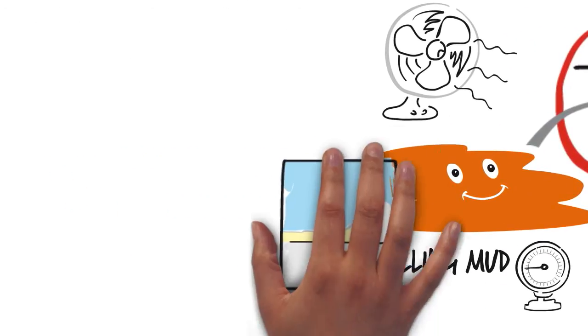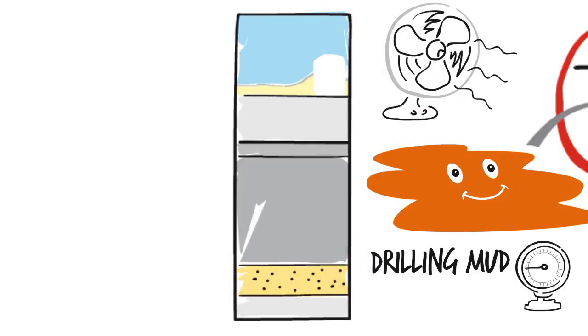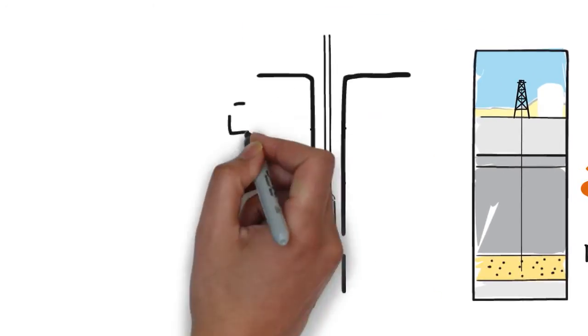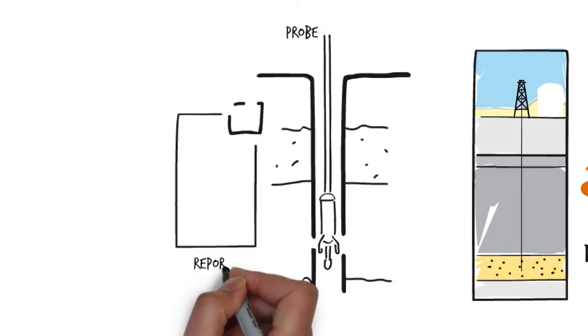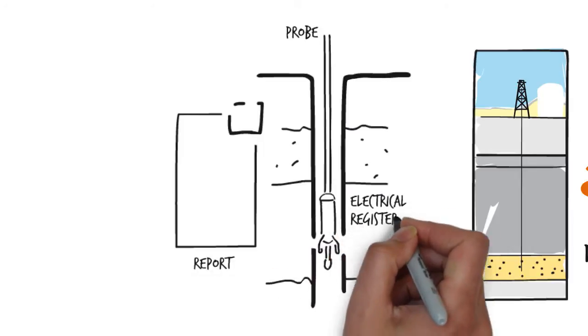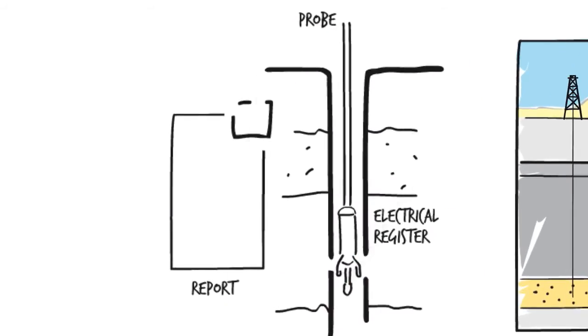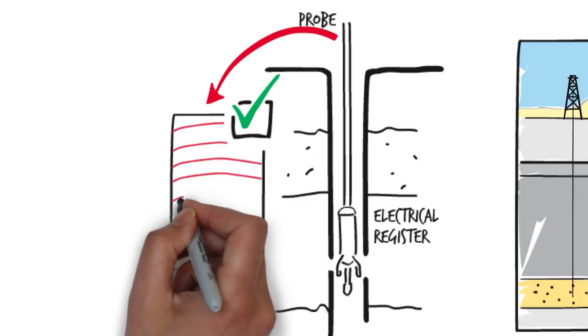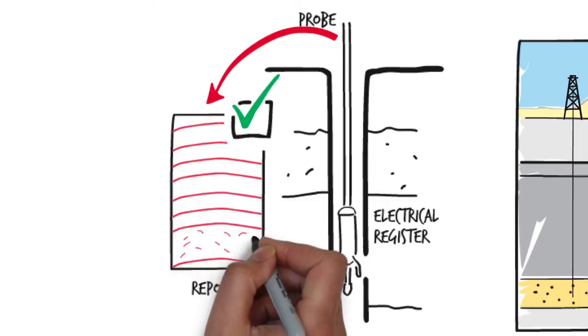We've reached the reservoir rock. Once the rock, which hopefully contains hydrocarbon, has been drilled, probes are introduced into the well to measure different physical parameters, both of the rocks and of the fluids in their pores. These measurements determine if the rock contains hydrocarbons or not.